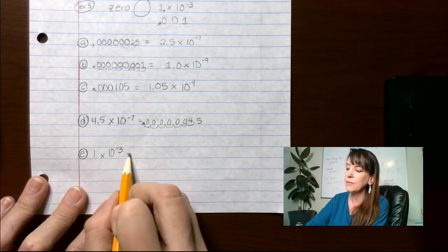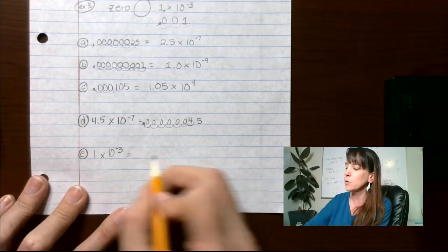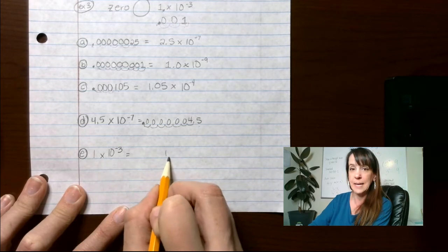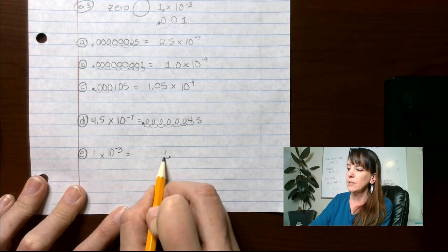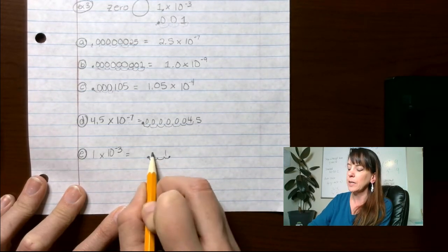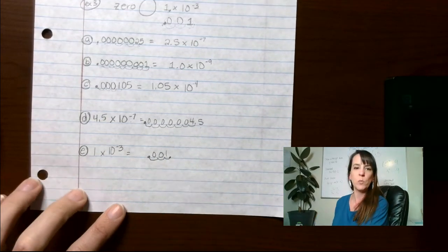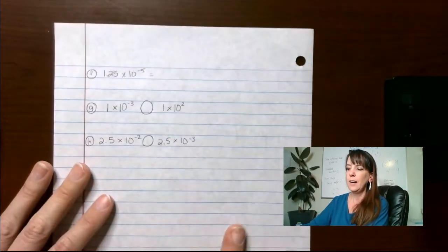Now 10 to the negative 3. So we're going to start with our 1. Our decimal is not shown. So it's at the end. We're going to go 1, 2, and 3. So we get 0.001 or 1 thousandth in there.